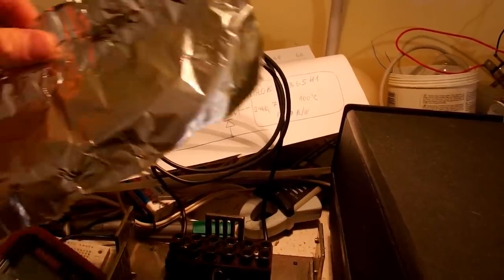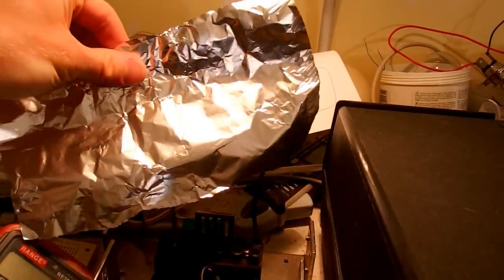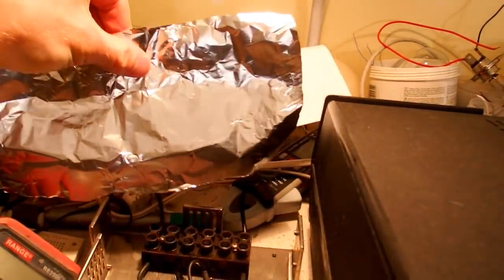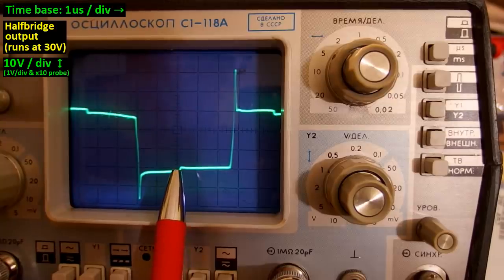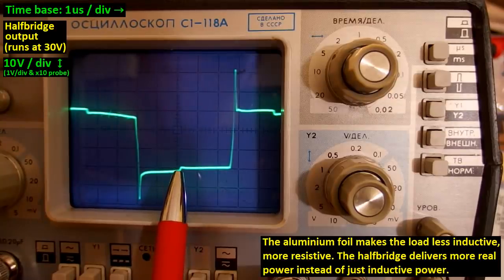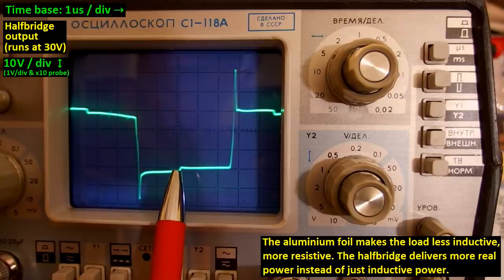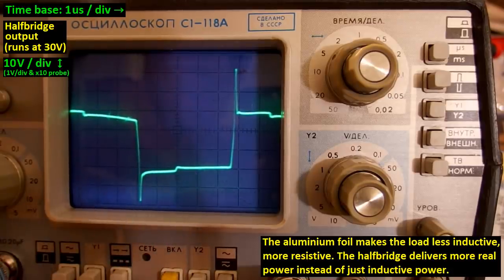Now let's try some induction heating. When I put an aluminum foil to the coil, it's getting hot. And this tiny notch is moving to the left as it's getting more resistive. Can you see that?